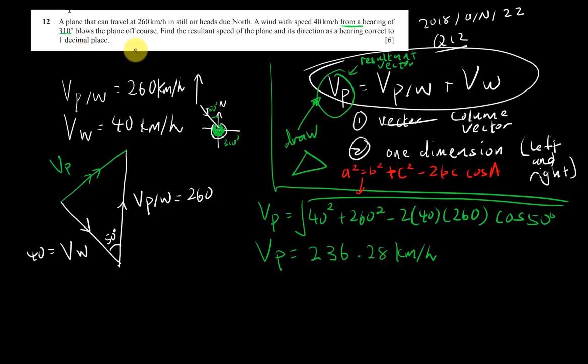I should get a very nice number, 236.28 km per hour. Since over here the one decimal place is only applied for bearing, he said find the resultant speed of the plane and its direction as a bearing correct to one decimal place, so I will just leave it like this. Or you can write 236 km per hour, ignoring the 0.28, I think that should be fine also.